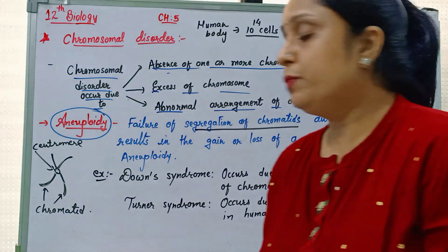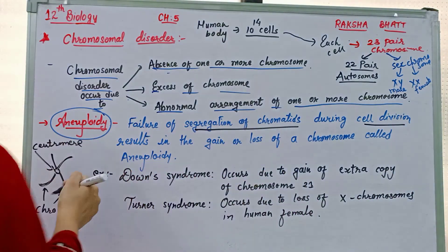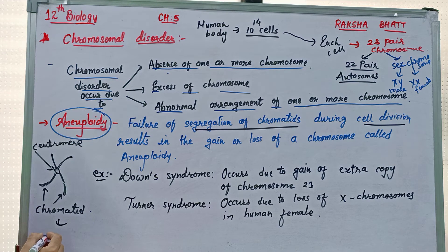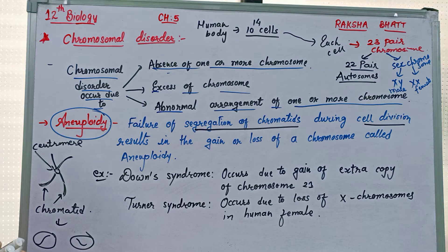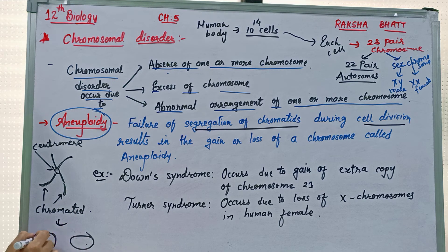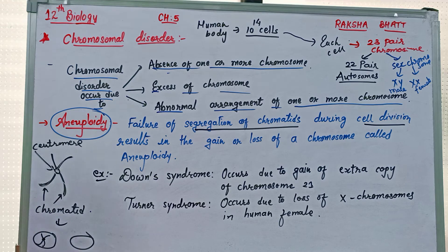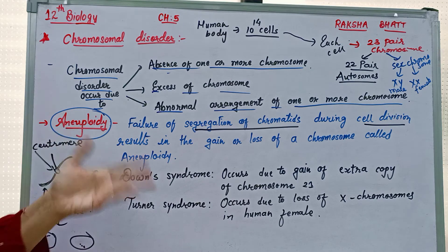When gamete formation occurs, during cell division the two chromatids separate — one chromatid goes to one cell, and the other chromatid goes to the other cell. But sometimes this separation does not happen normally. If such an abnormal gamete takes part in fertilization, the child is born with the disease.